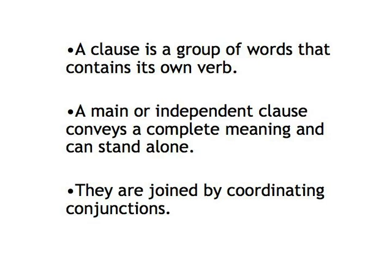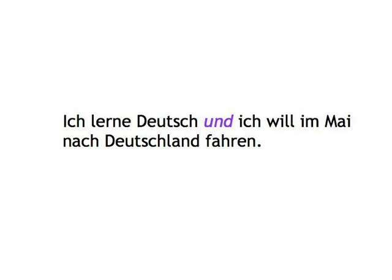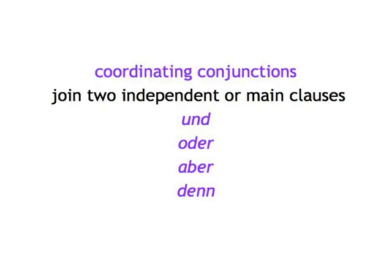If clauses are only associated with each other but still independent enough to stand alone, we call them independent or main clauses, because they carry a complete message on their own, and they're linked by coordinating conjunctions — words that bring two equal, stand-alone clauses together. Ich lerne Deutsch und ich will im Mai nach Deutschland fahren. And as you know, the verb is the second element in these clauses. The most important coordinating conjunctions are und, oder, aber, and denn — and, or, but, and because. No changes in word order happen in either of the independent clauses; they just have a conjunction in between them.